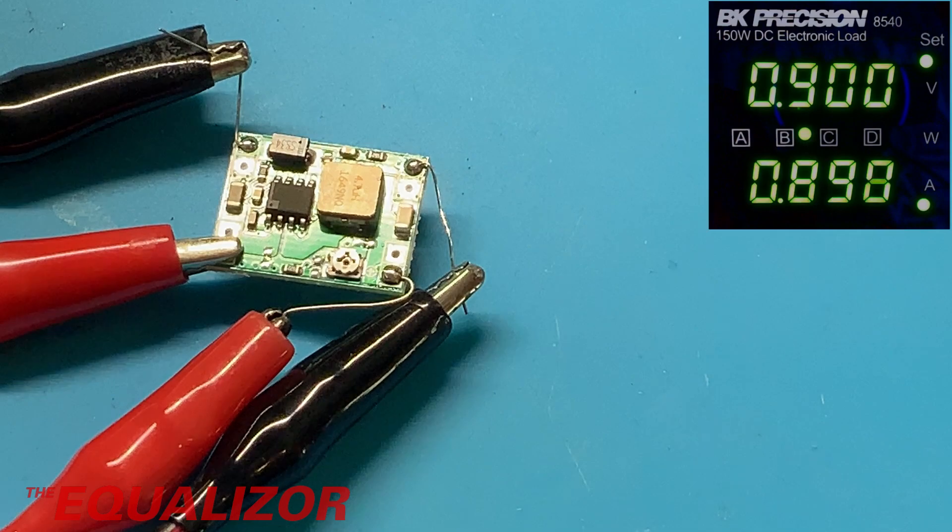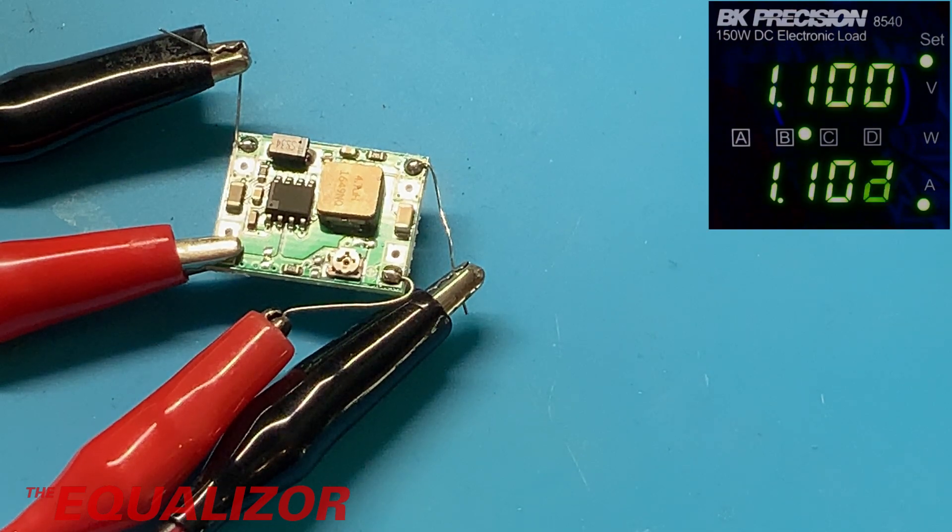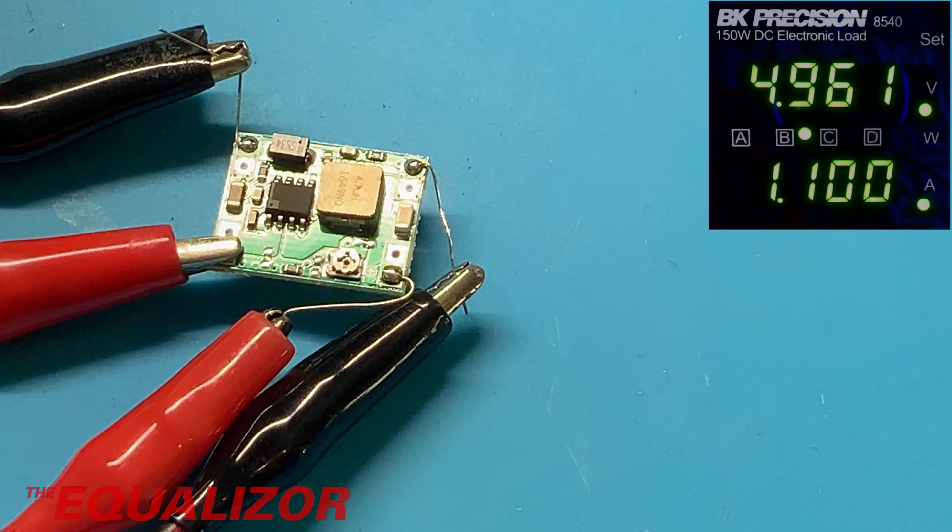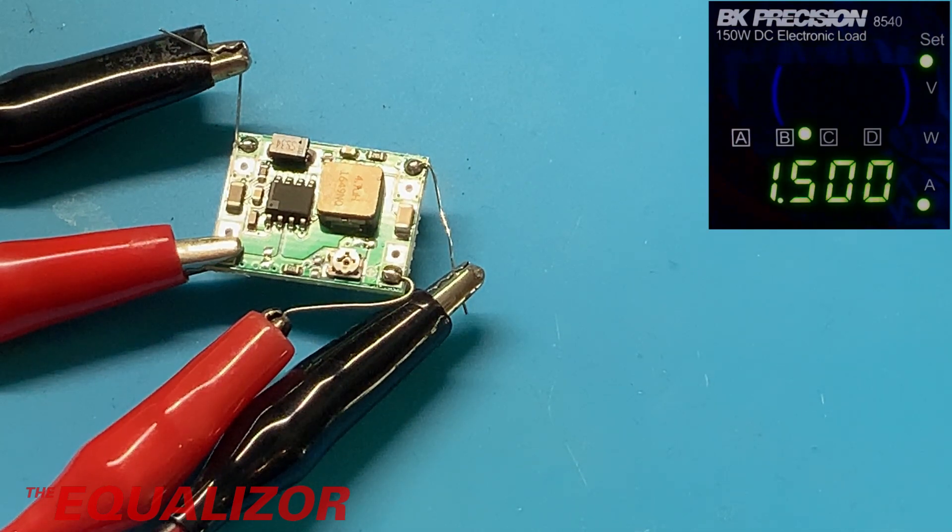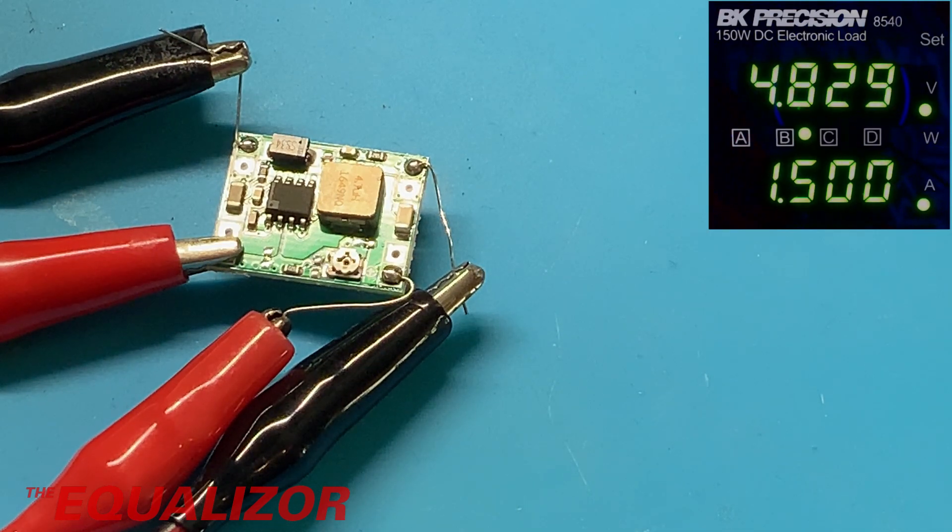Let's wind it up to an amp. Okay it's still within tolerance. 1.5 amps. Okay a little bit lower but it would still work.